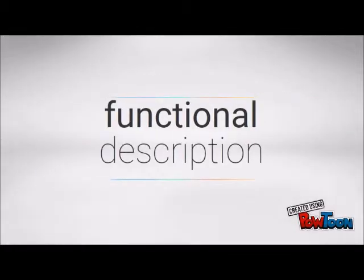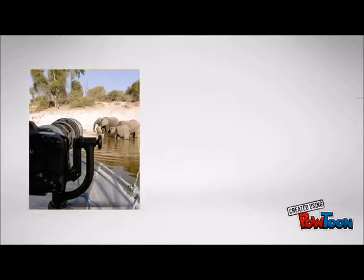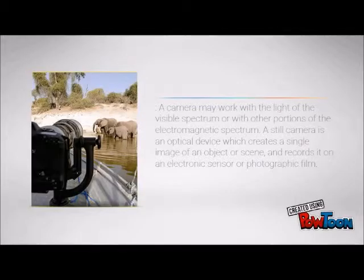Next up is its functional description. A camera may work with the light of the visible spectrum or with other portions of the electromagnetic spectrum. A still camera is an optical device which creates a single image of an object or scene and records it on an electronic sensor or photographic film.